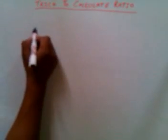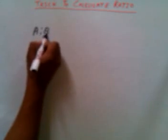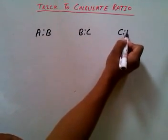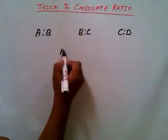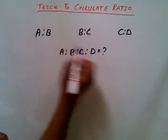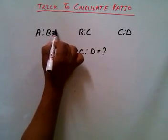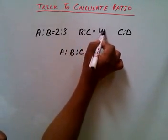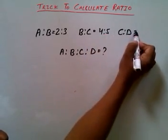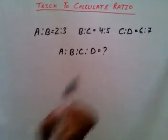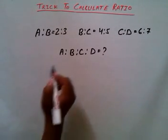Suppose we are given A ratio B and B ratio C and C ratio D. Let's take any ratio: A ratio B is 2 ratio 3, B ratio C is 4 ratio 5, and C ratio D is 6 ratio 7. And we have to calculate for A, B, C, D.